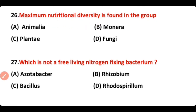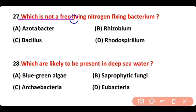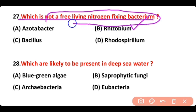Question 27. Which is not a free-living nitrogen-fixing bacteria? Options: Azotobacter, Rhizobium, Bacillus, Rhodospirillum. The correct answer is option B — Rhizobium is not a free-living nitrogen-fixing bacteria.